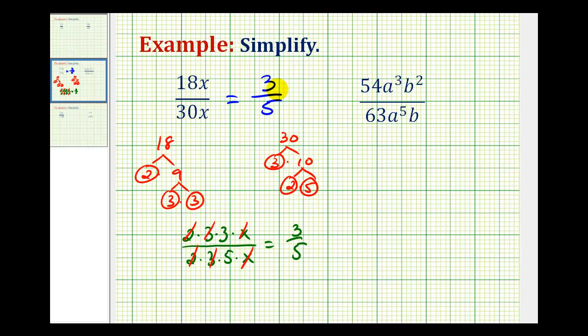Let's take a look at another one. Notice we have a lot more variable factors, but the process will be exactly the same. So let's find the prime factorization for 54. And you may be able to skip this step if you know your multiplication tables really well and you can identify the greatest common factor of 54 and 63 by inspection, but I'm going to assume we need to show the work.